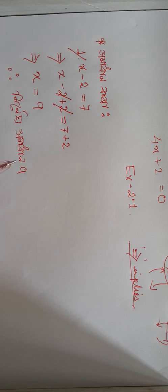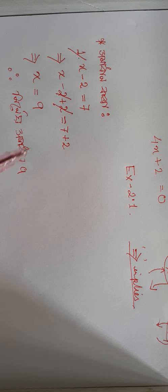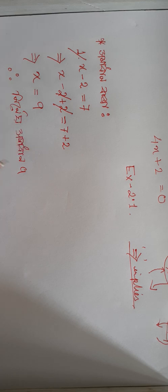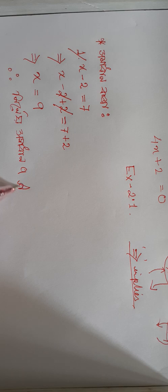x minus 2 equals to 7, implies x minus 2 plus 2 equals to 7 plus 2. x is equal to 9. It will have the answer.